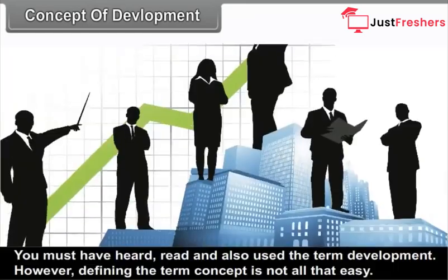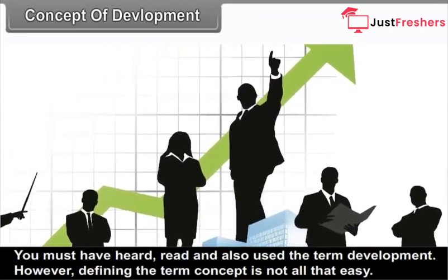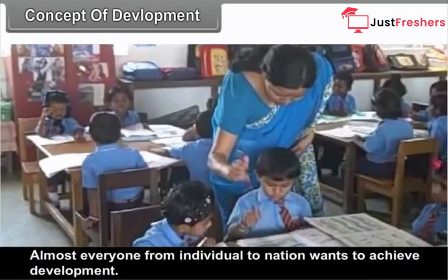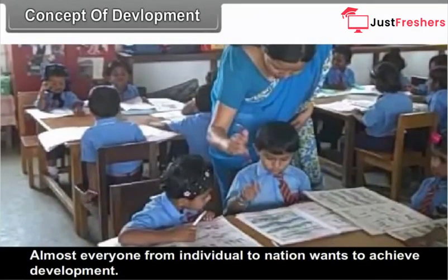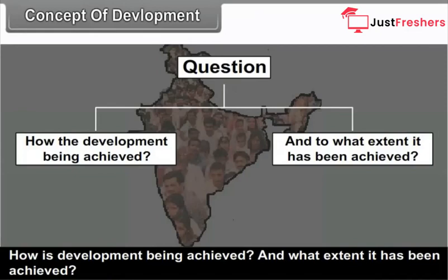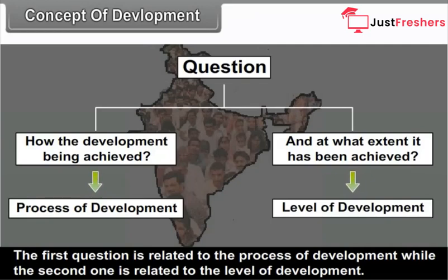You must have heard, read and used the term development. However, defining the concept is not all that easy. Almost everyone, from individuals to nations, wants to achieve development. When we think of development, two questions arise: How is development being achieved? And to what extent has it been achieved? The first question relates to the process of development, while the second relates to the level of development.